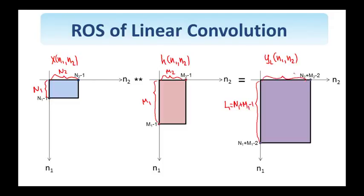L1, which is equal to N1 plus M1 minus 1, by L2, which is equal to N2 plus M2 minus 1. This is a rather straightforward result to show just by following the steps of the convolution.